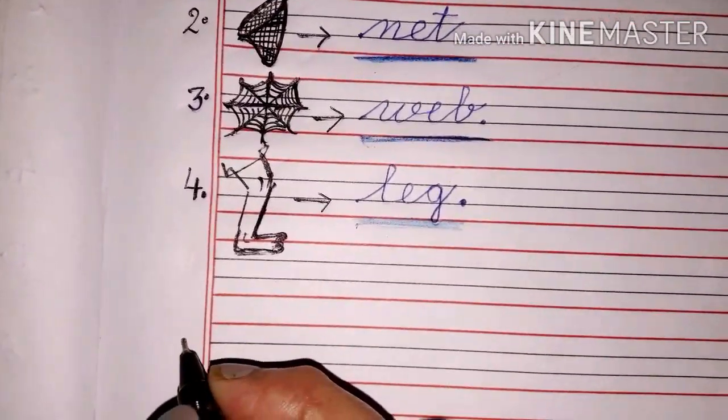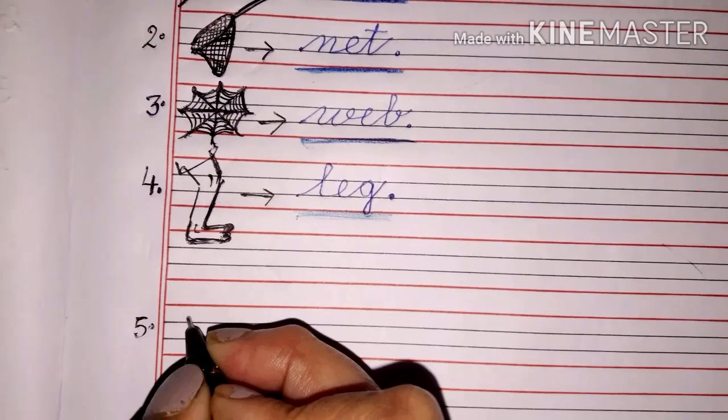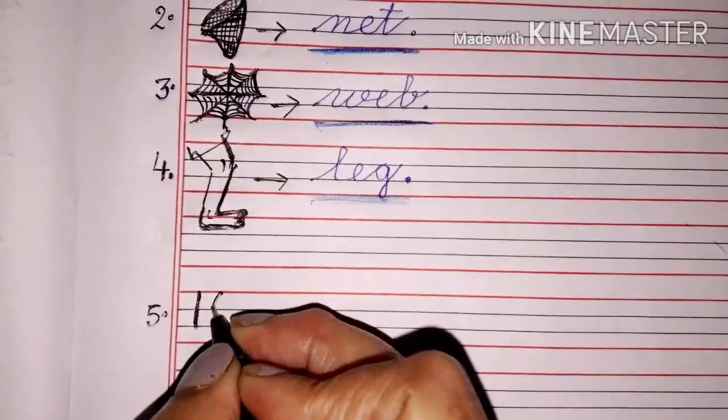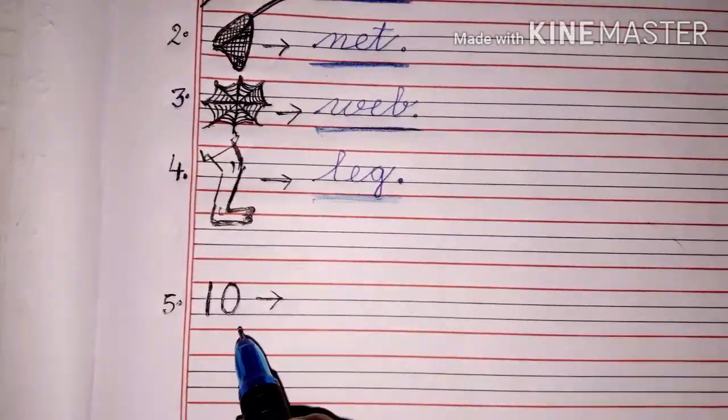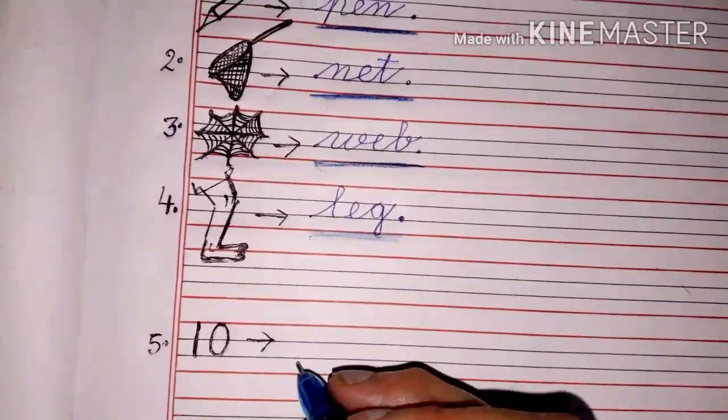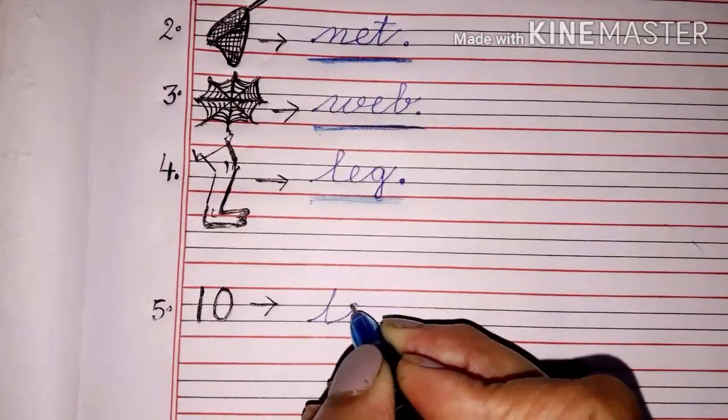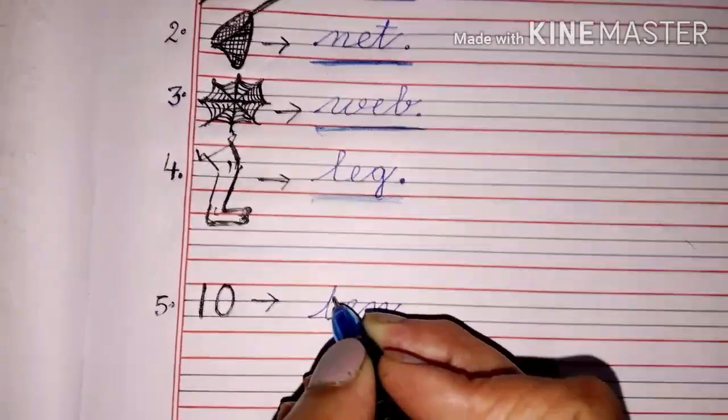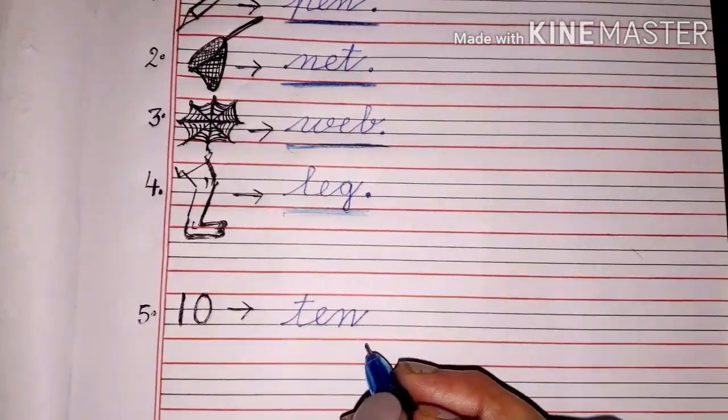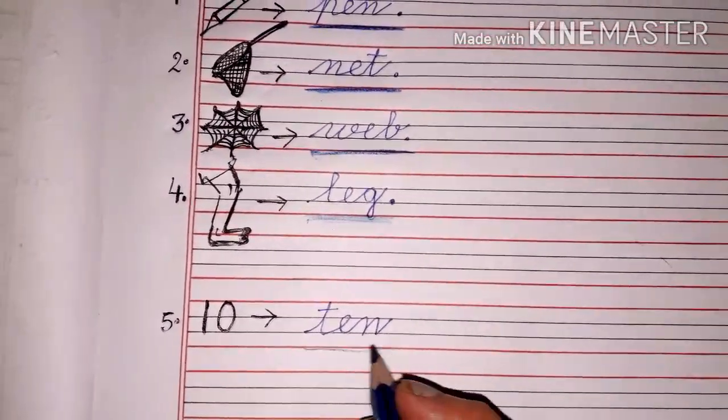There is no space so we will we can leave one line here and I'm going to draw it here. One and zero. What is this? Everybody knows that this is number 10. So right here T E N ten. Now underline it.